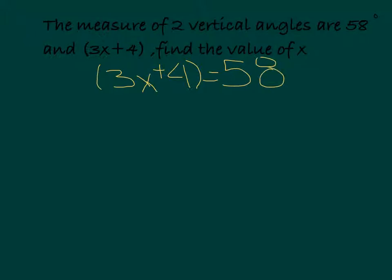It's like the other example we did, where you do to one side, you do to the other, and the opposite. Here, we will be doing 4. And the opposite of addition is subtraction. We will end up with 3x, and 58 minus 4 is 54.